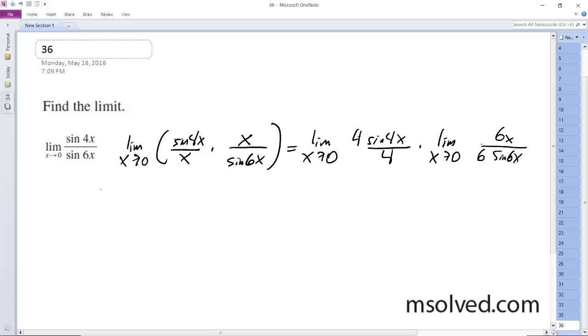Pulling out the coefficients, I get 4 times the limit as x approaches 0 of sine of 4x over 4, times 1 sixth times the limit of x approaches 0 of 6x over sine of 6x.